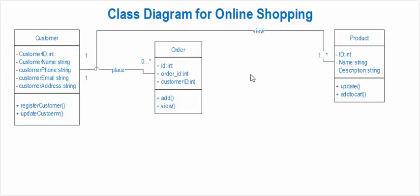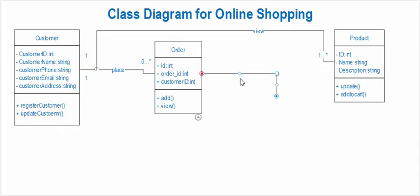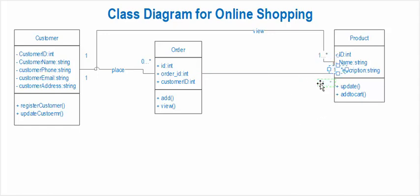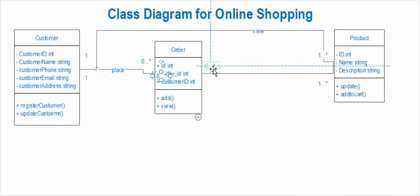Now let's create the relationship between order and product. An order must contain one or more products, and a product may or may not be in an order.